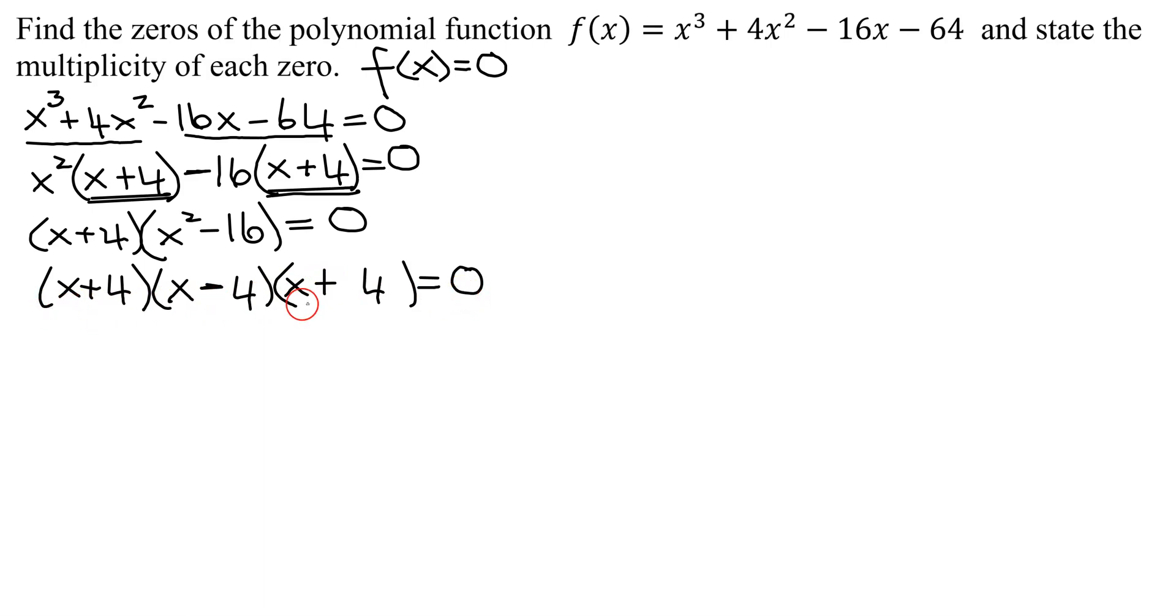So now I've totally factored my polynomial. And is there a better way of writing my factors? Notice x + 4 and x + 4, I have two identical factors. So I can write this as (x + 4)²(x - 4) = 0. Now since I have my factors multiplied together equaling 0, I can use the zero product principle. I'm going to set each factor equal to 0.